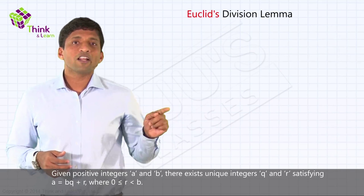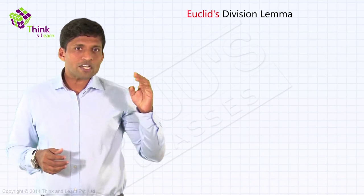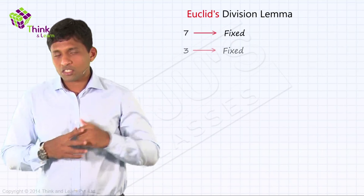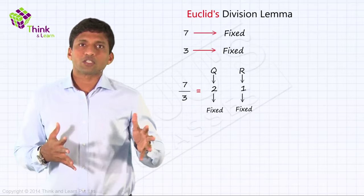Now going back to the chocolate example, we had the first example, we had seven chocolates. So once you fix that number 7 and three chocolates per box, that's also fixed. Then it is obvious that the number of boxes which you can take and the left out chocolates, they are also getting fixed by default.